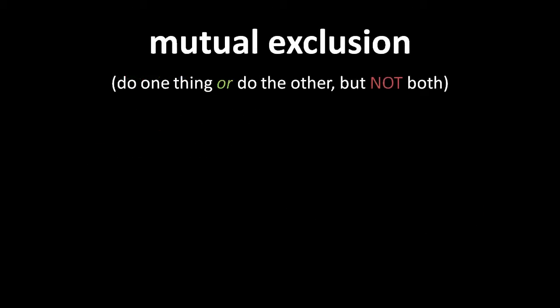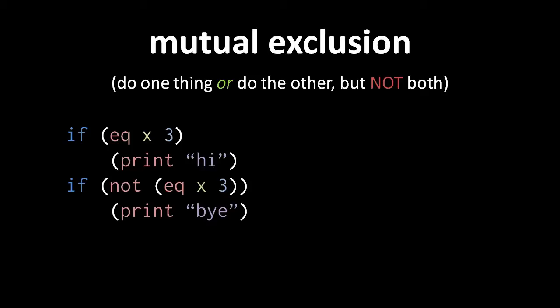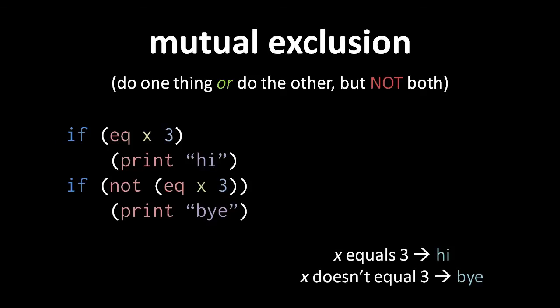Other times in code, we want not just to skip over something — we want to make a choice of either doing one thing or another thing, and this is called mutual exclusion. We do one thing or the other, but not both. For this purpose, we can simply use two separate if statements by giving them logically inverse conditions. So when this example executes, when x equals three, the condition of the first will be true but the condition of the second will be false, so the code will print high but not by. On the other hand, when x does not equal three, then the condition of the first will test false but the condition of the second if will test true, so this code will print by but not high.